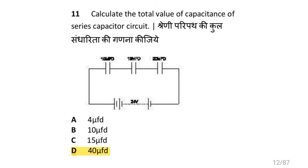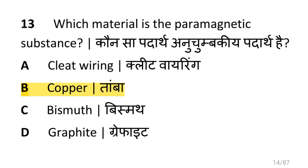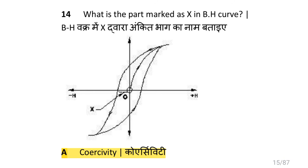Calculate the total capacitance of the series capacitor circuit — using the same formula for series capacitors, the answer is 10 microfarad. What precautions should be taken before connecting different voltage-rating capacitors in series? Each capacitor's voltage drop must be less than its voltage rating. Which material is a paramagnetic substance? That is copper.